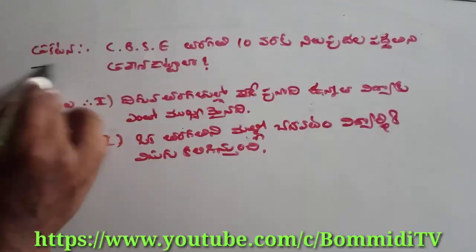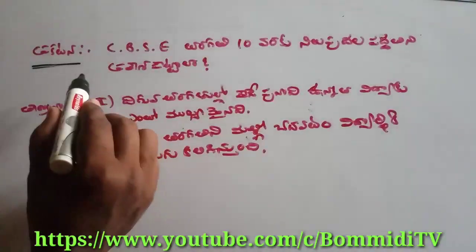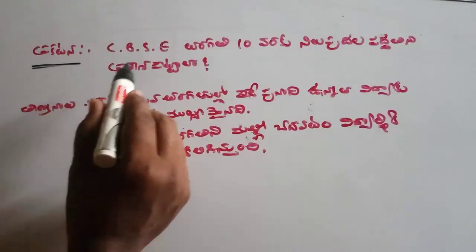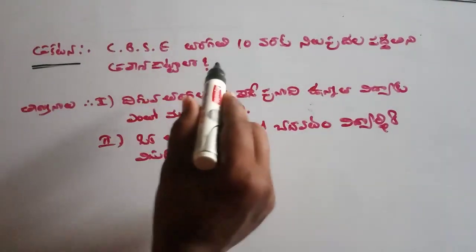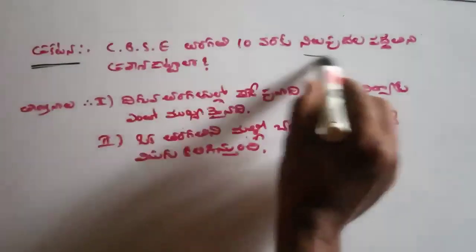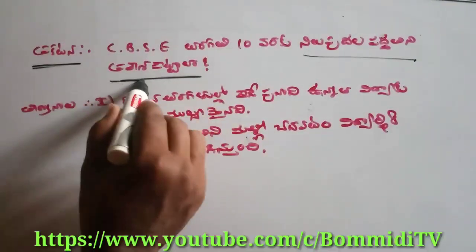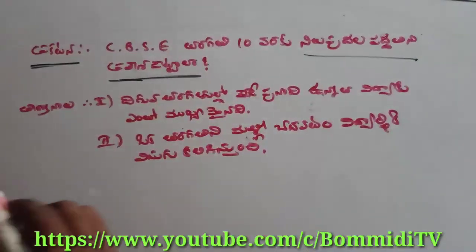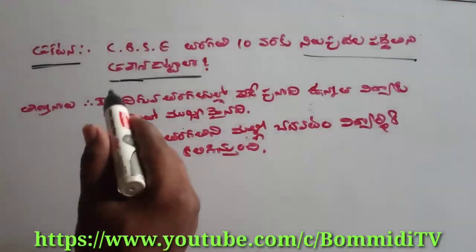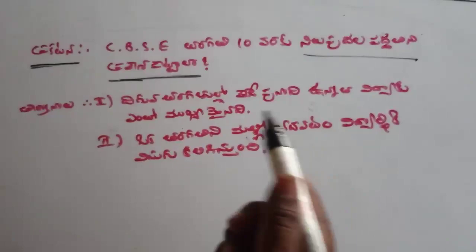My friend, the quote is CBC — the 10th time of the year, the 10th time of the year, the three years. So this is the answer. CBC, the 10th time of the year, the 10th time of the year.